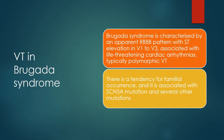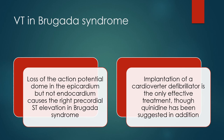Brugada syndrome is characterized by an apparent RBBB pattern with ST elevation in V1 to V3 associated with life-threatening cardiac arrhythmias, typically polymorphic VT. There is a tendency for familial occurrence, and it is associated with SCN5A mutation and several other mutations. Loss of the action potential dome in the epicardium but not endocardium causes the right precordial ST elevation in Brugada syndrome. Implantation of a cardioverter defibrillator is the only effective treatment, though quinidine has been suggested in addition.